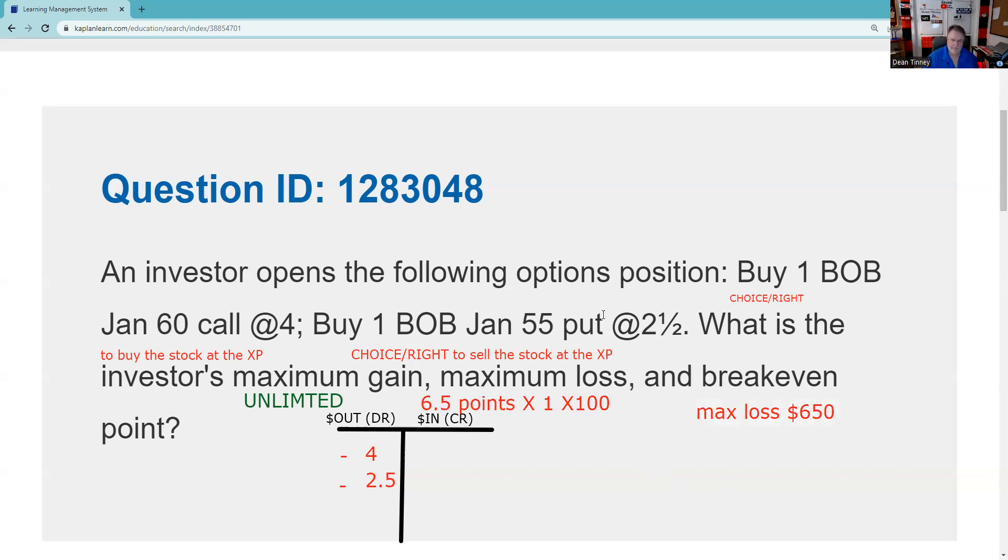Breakeven. Call up, put down. So the way I get breakevens is I'm going to take strike price plus total premium, and that's going to equal my upside breakeven. And I'm going to take strike price minus total premium. Call up, put down. Get my downside breakeven. Straddles combinations are the only position where you actually have two breakevens.